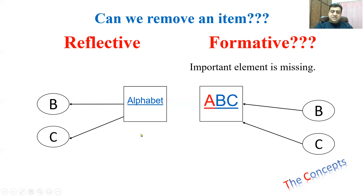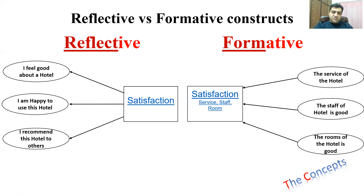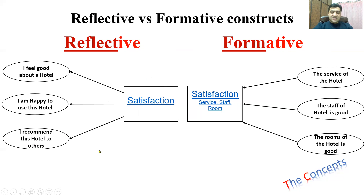Let's consider a research example. Suppose you are trying to measure the customer satisfaction of a hotel. The items might be: 'I feel good about this hotel,' 'I am happy to use this hotel,' and 'I recommend this hotel to others.' These three items measure customer satisfaction. Each item independently measures satisfaction — this second item and this third item also measure satisfaction independently.